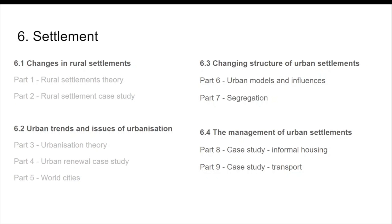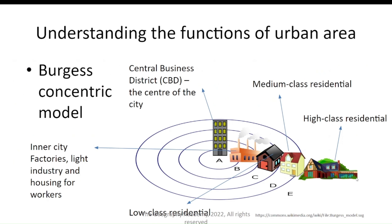Part three is about the changing structure of urban settlements. We've got models to look at, the influences, and the patterns and trends that are happening, and then we're going to look at how segregation has occurred in some of these urban areas. The first model to look at is the Burgess concentric model.